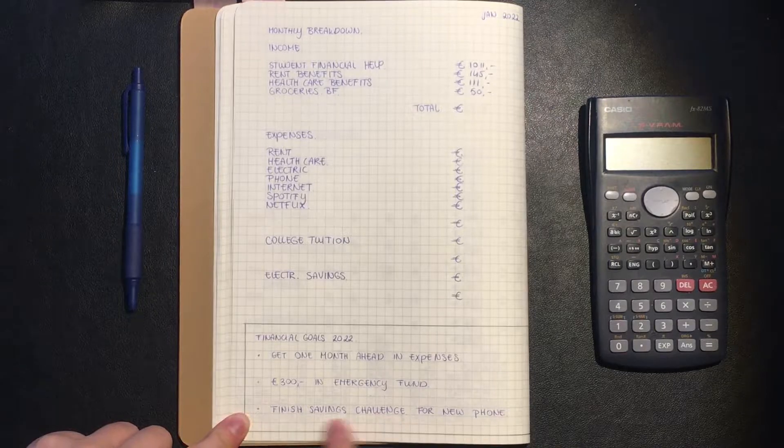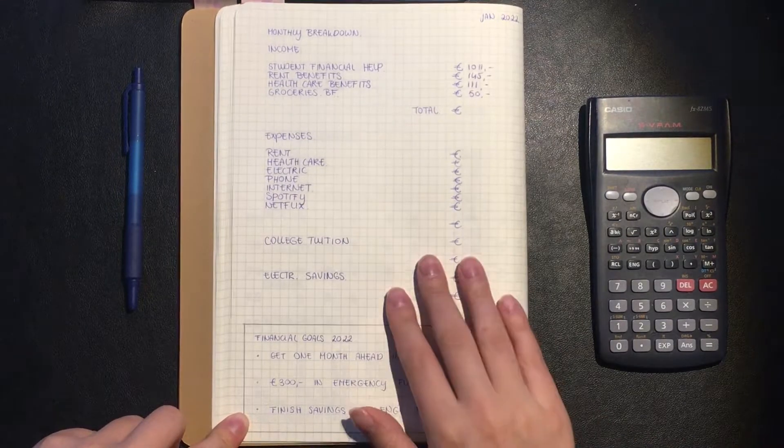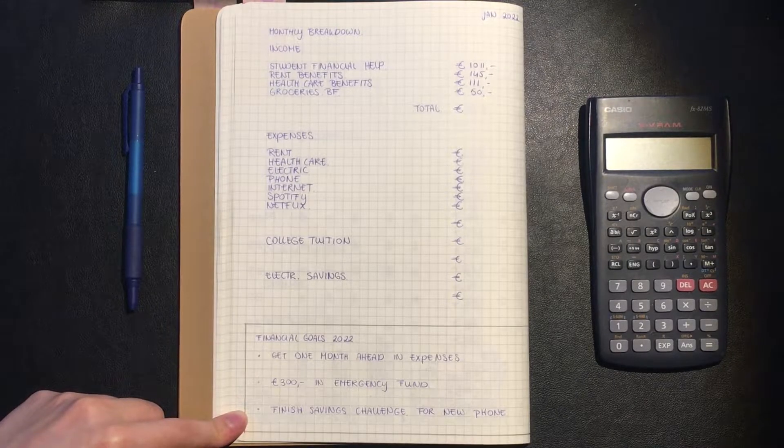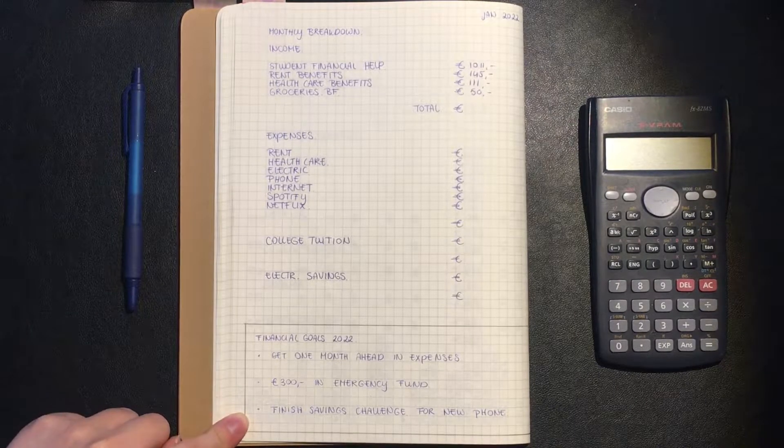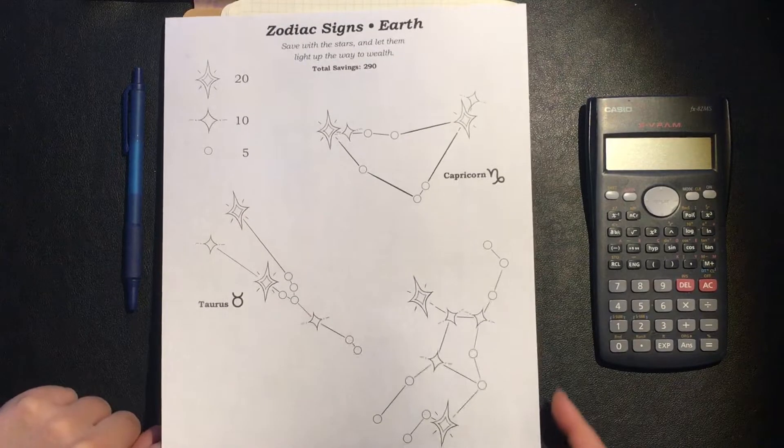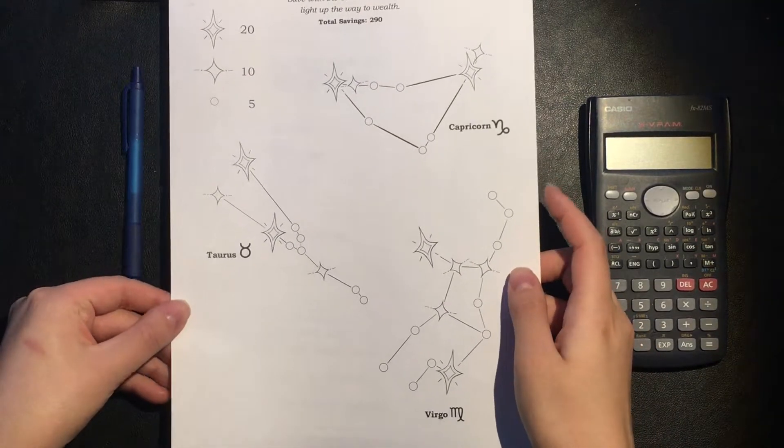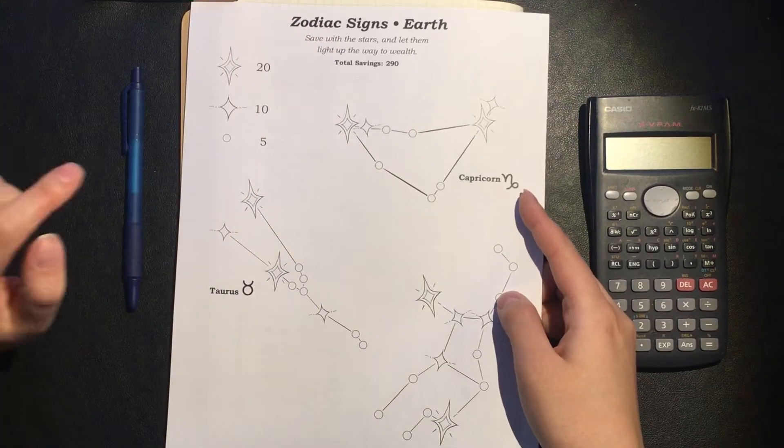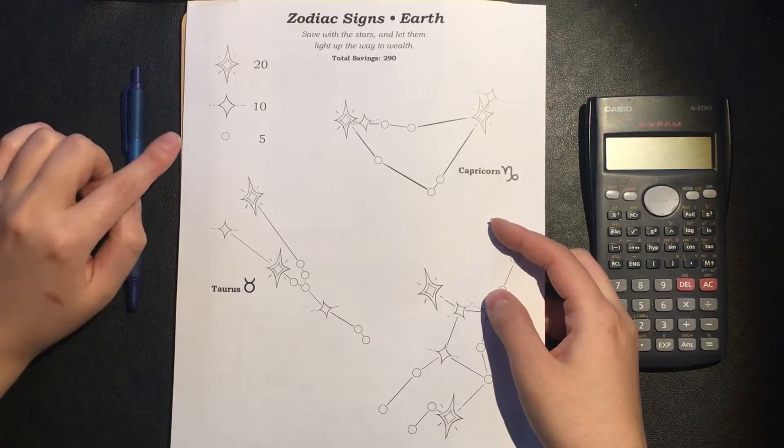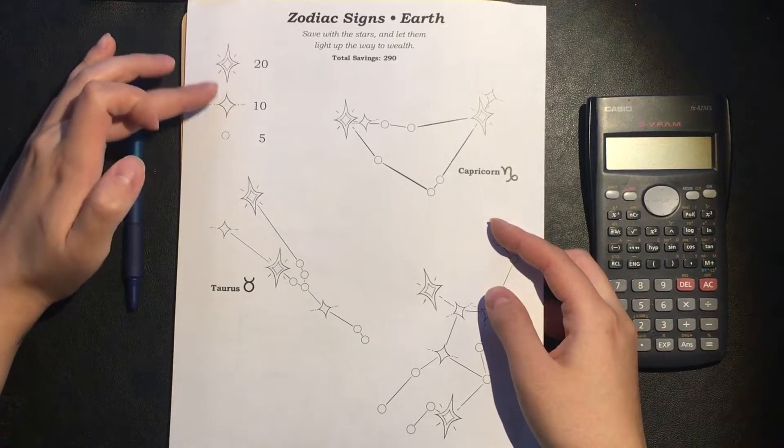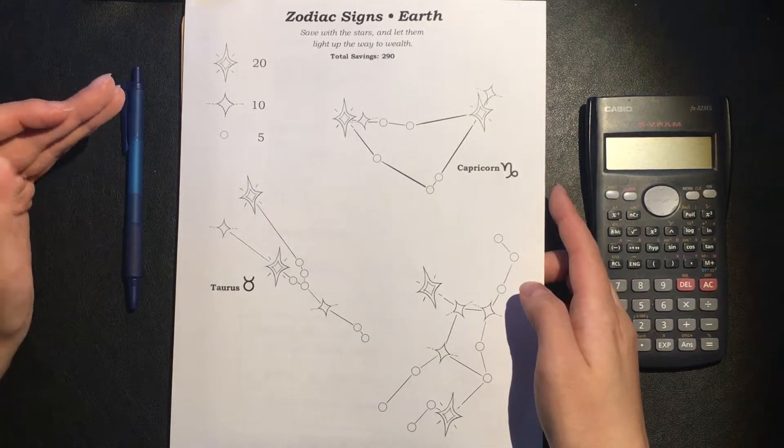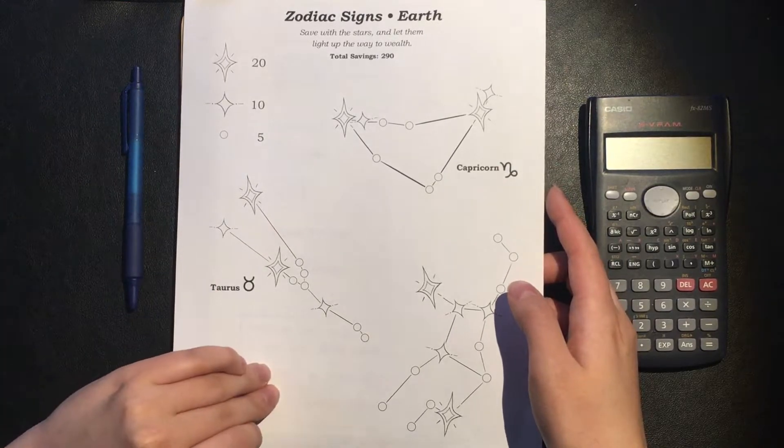And the last one is finish my savings challenge for a new phone. I am going to use one of my own saving challenges, the zodiac signs earth, because it has very low denominations. So I do think that I am going to be able to finish that this year.